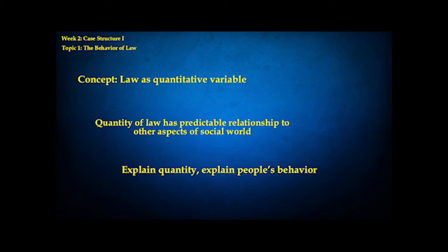He also talks about the style of law, but we won't get into that just yet — we'll save that for next week. So the quantity of law he proposes has predictable relationships to other aspects of the social world. The idea is to try to explain the quantity of law by specifying which aspects of the social world lead a case to attract more law.